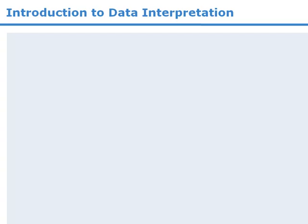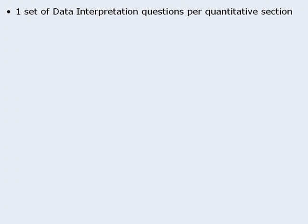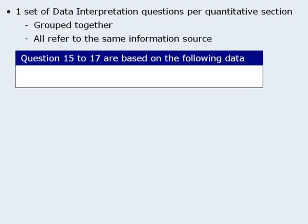Within each quantitative section of the GRE, you will typically encounter one set of data interpretation questions. These questions are grouped together, and they all refer to the same information source. When you come to the first data interpretation question in the set, you'll see a message telling you that the upcoming group of questions are all based on the same data.